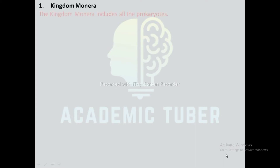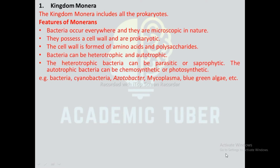Kingdom Monera includes all the prokaryotes. Features of monerans: bacteria occur everywhere and are microscopic in nature; they possess a cell wall and are prokaryotic; the cell wall is formed of amino acids and polysaccharides; bacteria can be heterotrophic or autotrophic. Heterotrophic bacteria can be parasitic or saprophytic; autotrophic bacteria can be chemosynthetic or photosynthetic. Examples: bacteria, cyanobacteria, Azotobacter, mycoplasma, blue-green algae, etc.